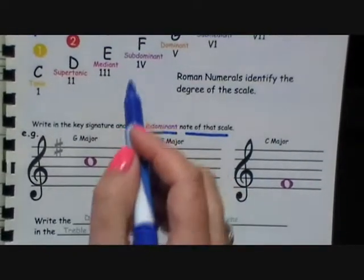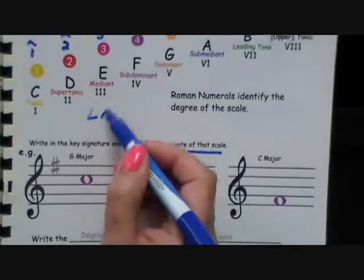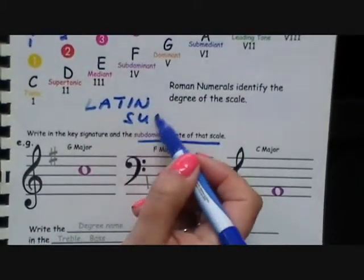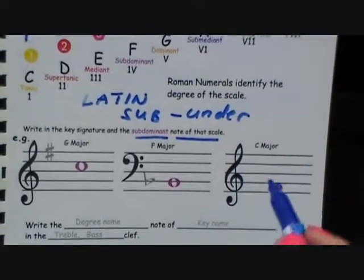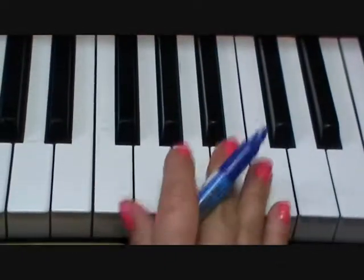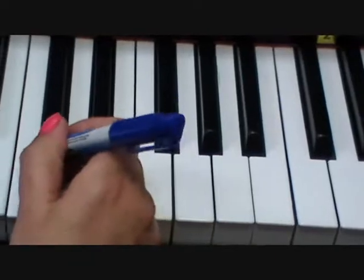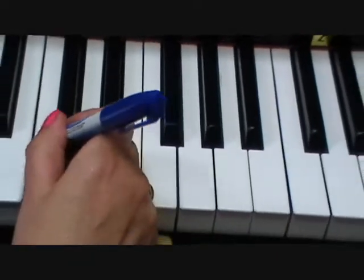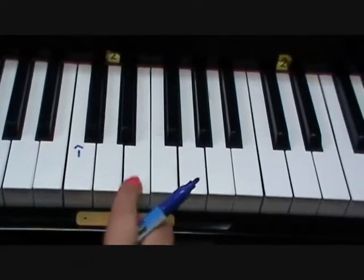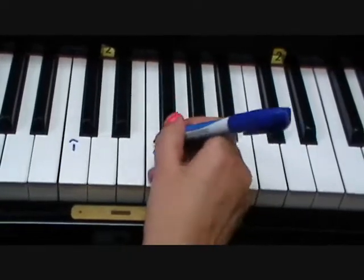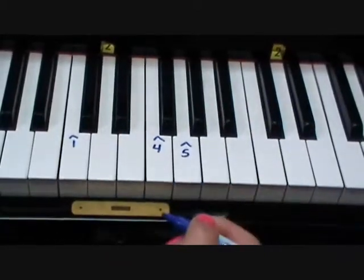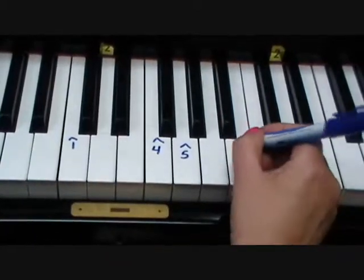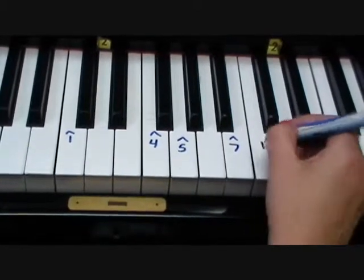The subdominant note — in Latin, the word 'sub' means under. So here we have the scale from C to C. We have the tonic note. Let's count 4 notes up: 1, 2, 3, 4 — we have the subdominant note. The 5th is the dominant, and we have our 7th. These two outer notes are the same, so there are 7 different tones.